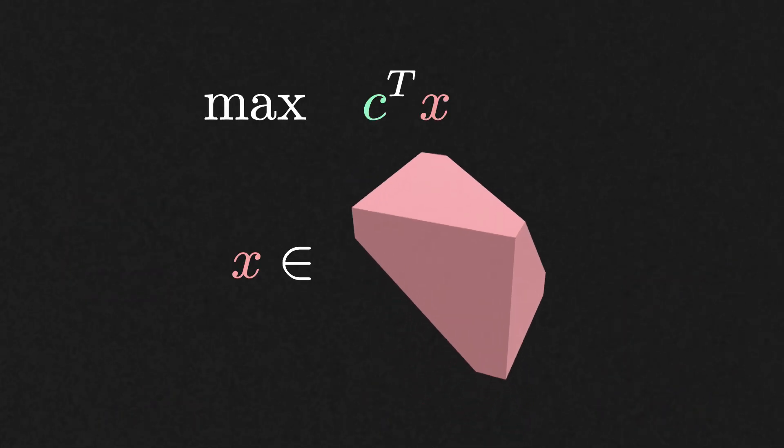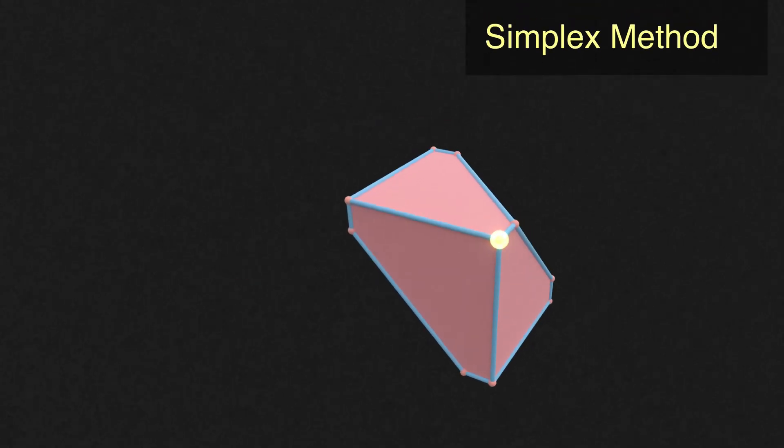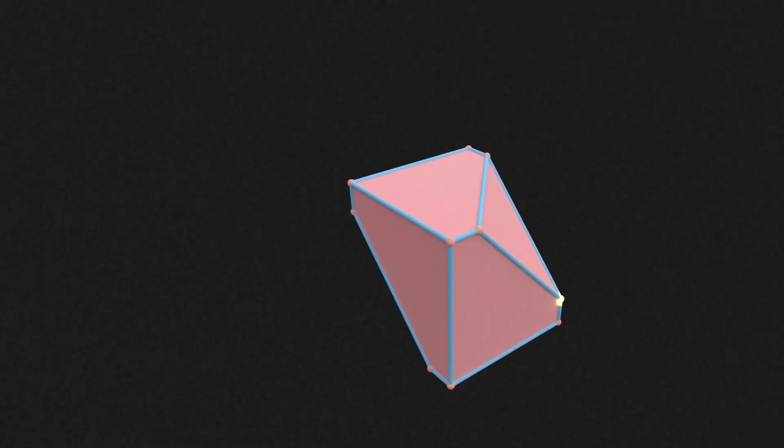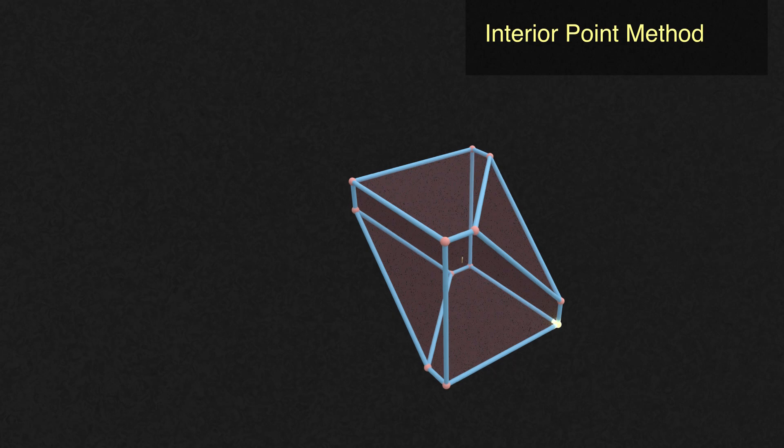There are two practical ways to find the optimal solution to a linear program. The simplex method that travels from one vertex to a neighboring vertex along edges until the optimal solution is found, and the interior point method that, as the name indicates,